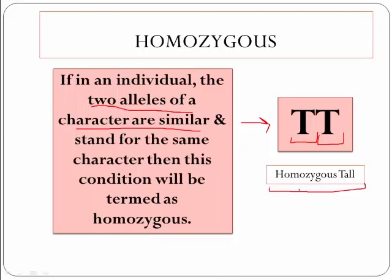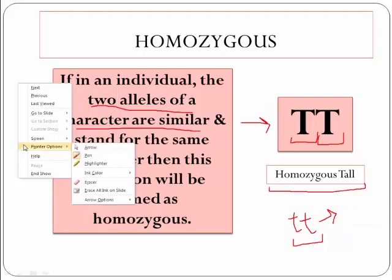If they were small t and small t — instead of capital T, capital T — then they would be known as homozygous short, that is, a homozygous short plant. Now you must have understood what is homozygous.